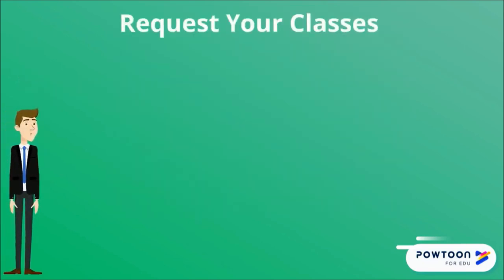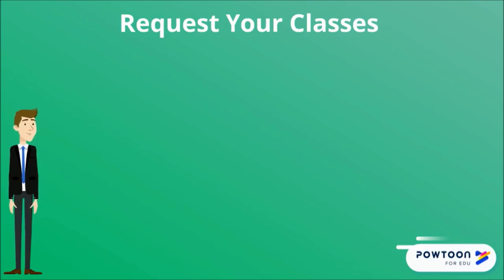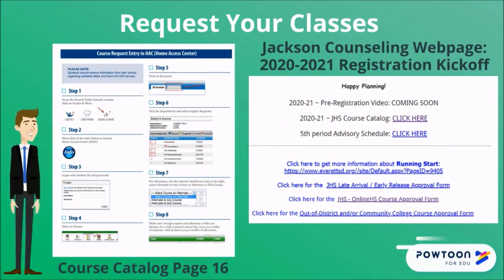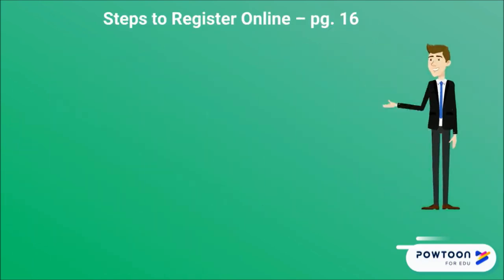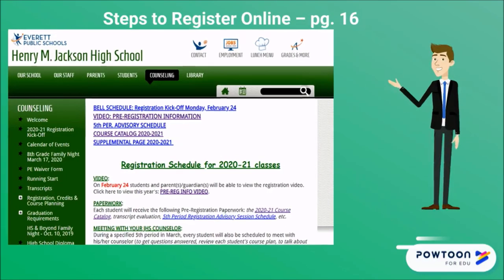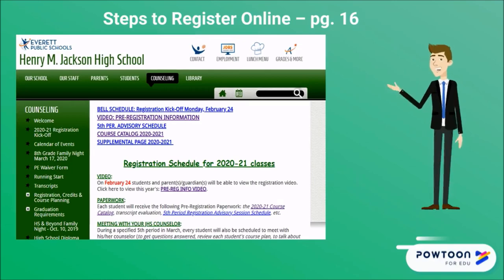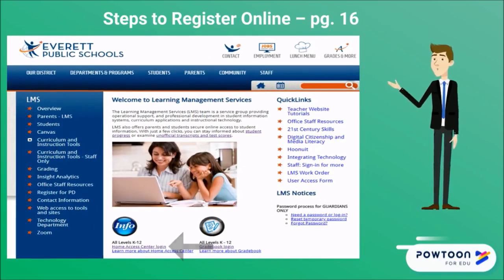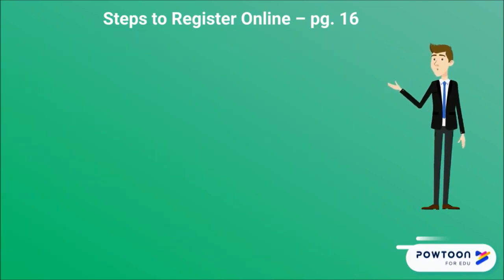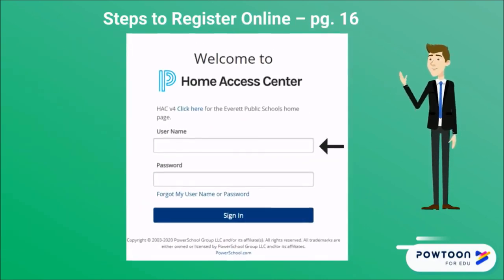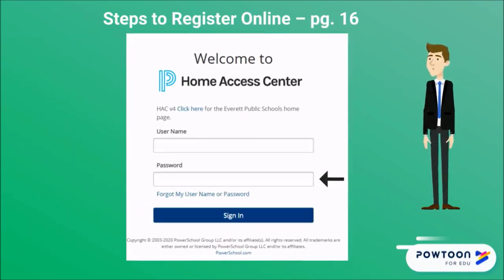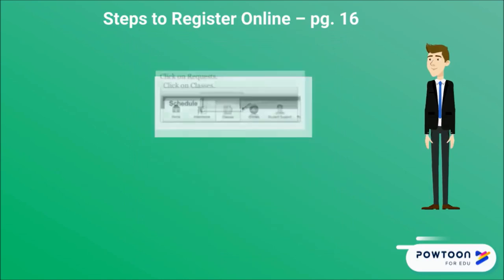You now have everything you need to request your classes for next year — congrats T-Wolf! The Jackson Counseling webpage and your course catalog have directions on how to enter your request into Home Access Center. To request your classes online, go to the District or Jackson website and select Grades and More in the top right corner. Then select the link to Home Access Center or HAC. Enter your student ID number as your username and district password to log in. Now select Classes and in the Request tab, you're ready to go.